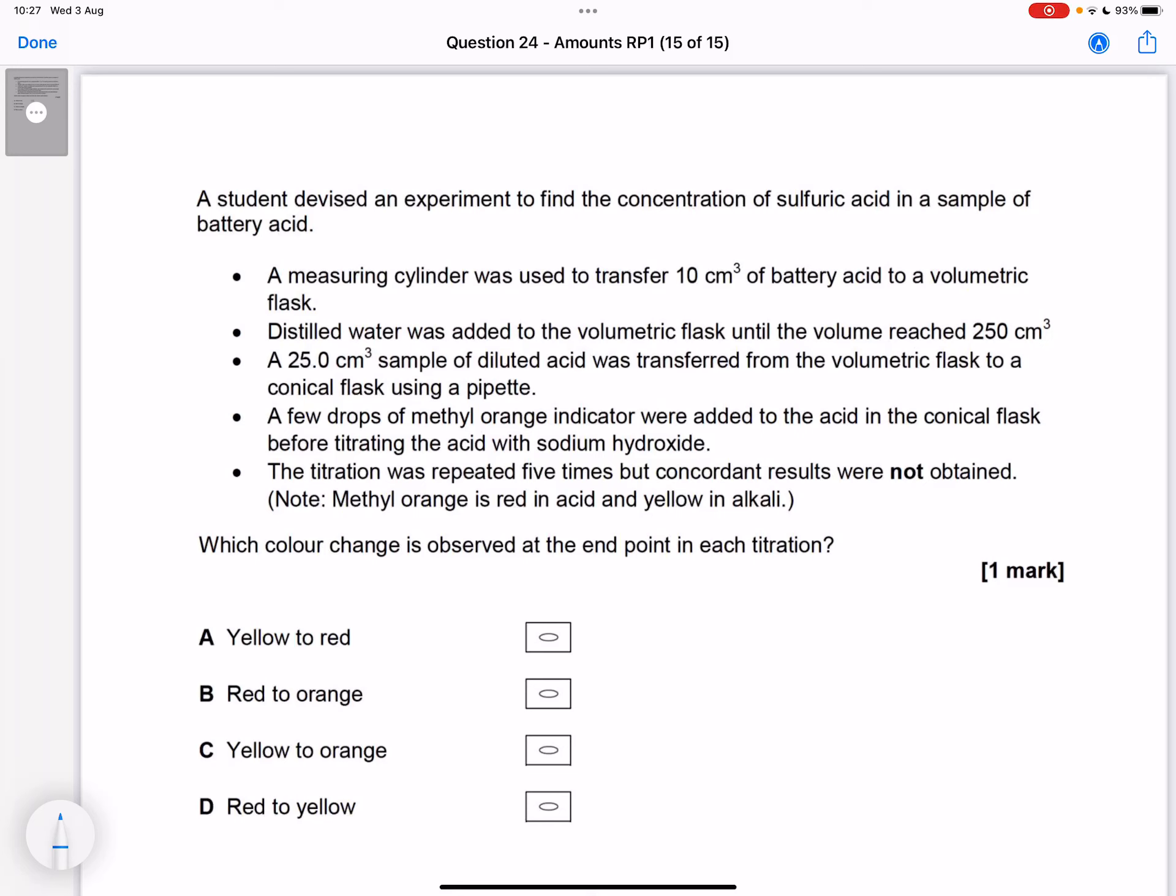Hopefully you've read the method. We're being asked which color change is observed at the endpoint of this titration. Now we've been given the information we need. We've been told methyl orange is red in acid and yellow in alkali.